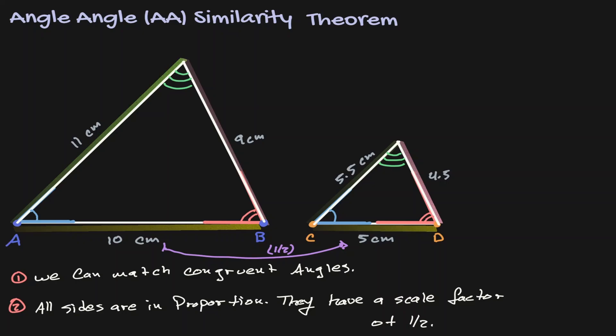Now notice the following: we were able to match congruent angles and all sides were in proportion, so we can conclude that these two triangles are similar to each other. And this is the idea behind the angle-angle similarity theorem: if two angles of one triangle are congruent to two angles of a second triangle, then we can conclude that those triangles are similar to each other.